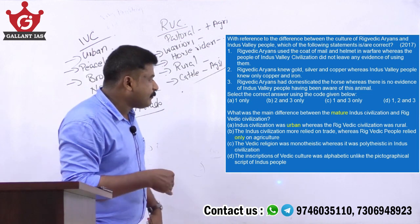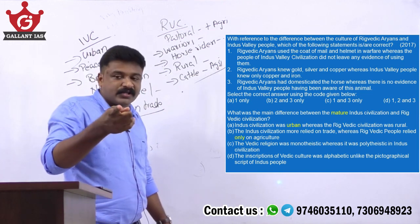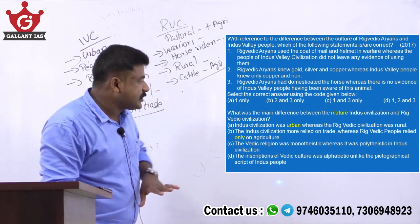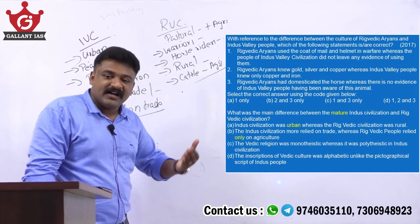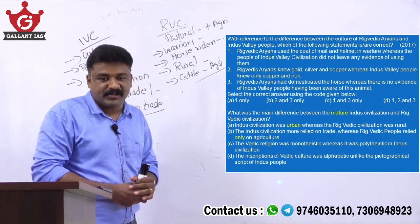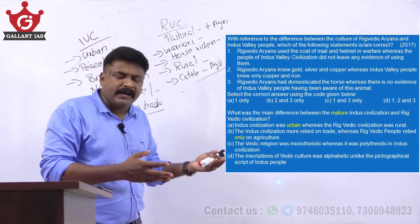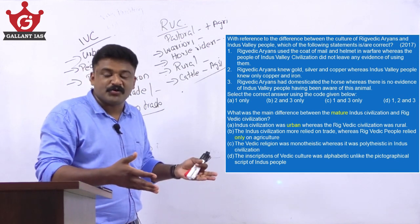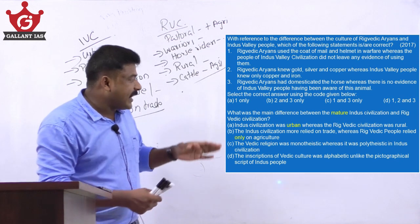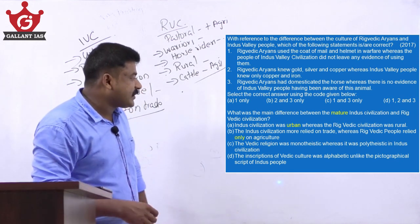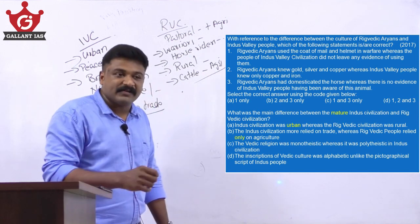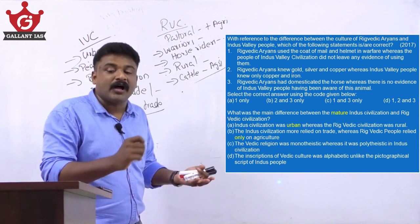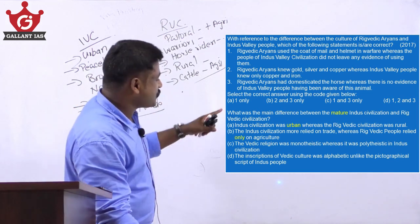A probable question: what was the main difference between mature Indus civilization and Rig Vedic culture? Mature means urban — Indus civilization was urban whereas Rig Vedic civilization was rural. Regarding trade: Indus civilization relied on trade whereas Rig Vedic people relied 'only on agriculture' — but 'only' is wrong, it was pastoral economy plus agriculture. Regarding religion: Vedic religion was monotheistic and Indus polytheistic — actually both followed polytheistic religion with tree worship, fertility cult, male/female deity worship. The inscriptions of Vedic culture were alphabetic unlike the pictographical script of Indus people — but there is no evidence Rig Vedic people knew the art of writing. Answer: option one only.